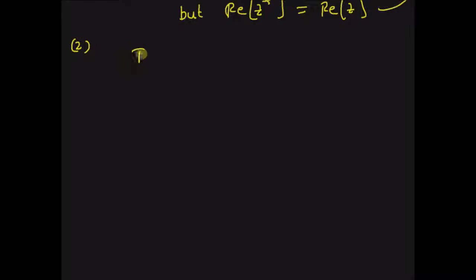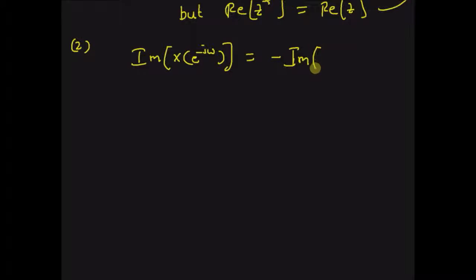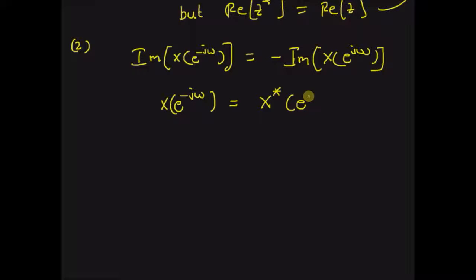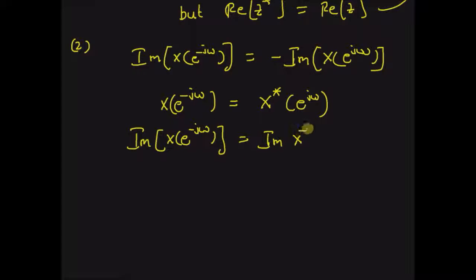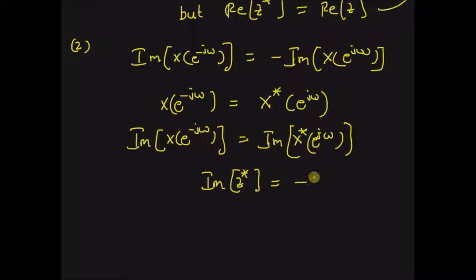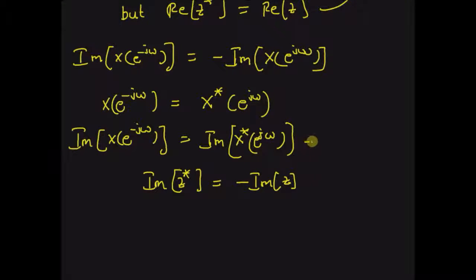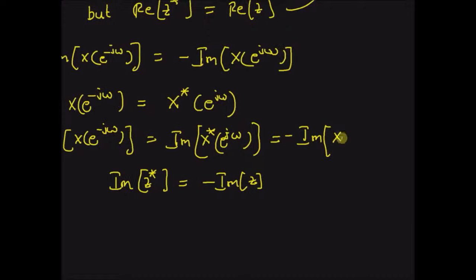The next consequence is: the imaginary component of X(e^{-jω}) is equal to the negative of the imaginary component of X(e^{jω}). Again, this property also follows from the symmetry property, that is X(e^{-jω}) is equal to X*(e^{jω}). Since the imaginary component of z* is equal to minus the imaginary component of z, this should be equal to minus the imaginary component of X(e^{jω}).